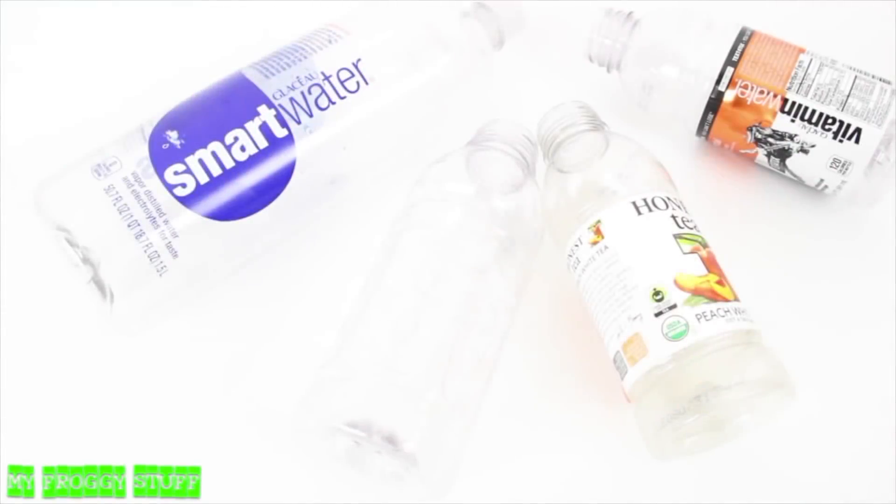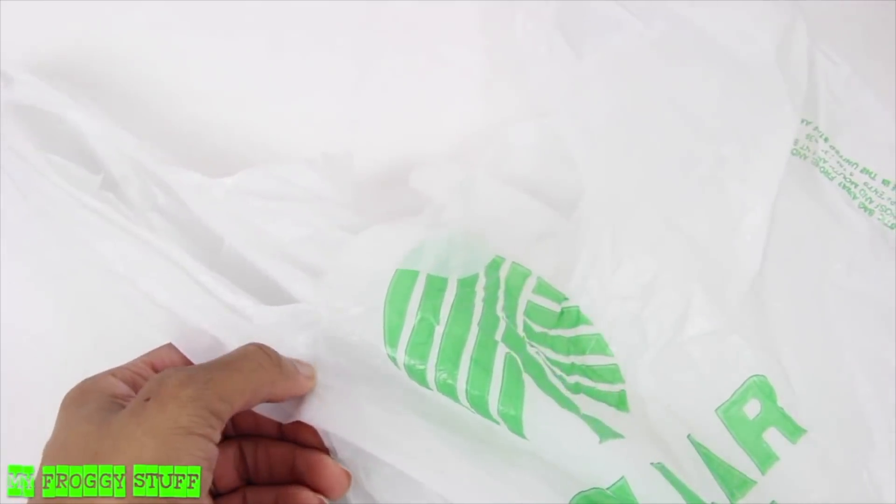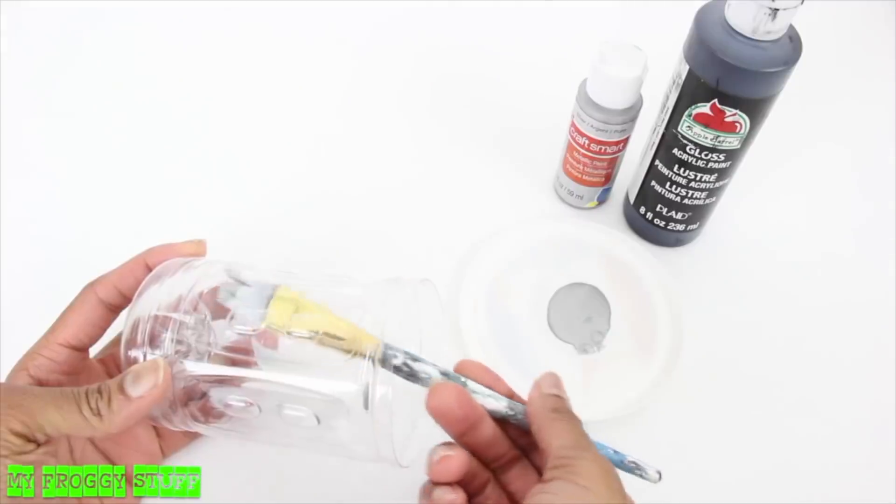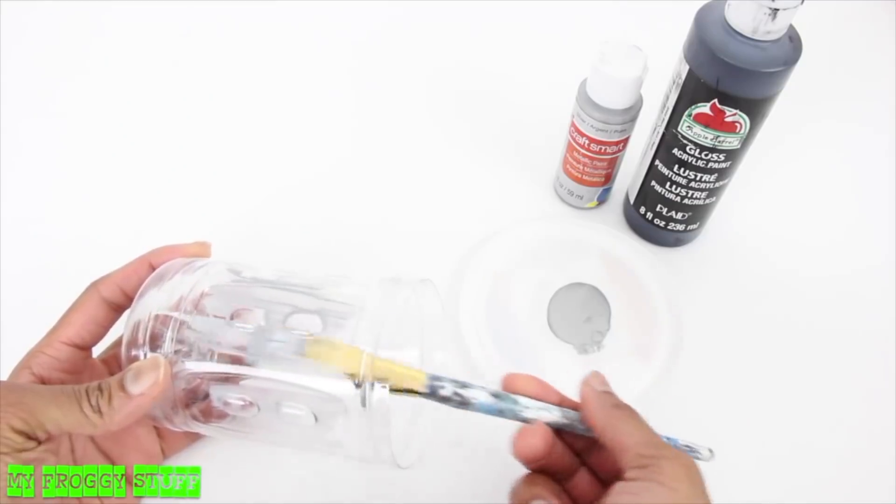I am going to make a trash can for a doll using plastic water bottles, a grocery bag, tape, craft paint, and glue. I start by removing the label from a water bottle. Trim off the top. Begin painting the inside with craft paint.